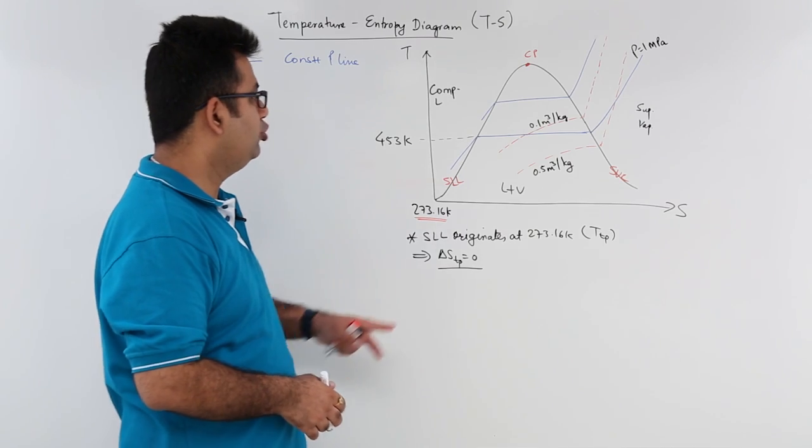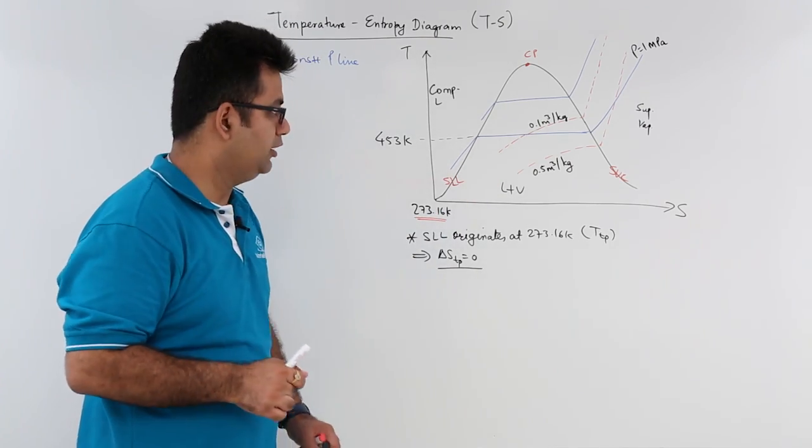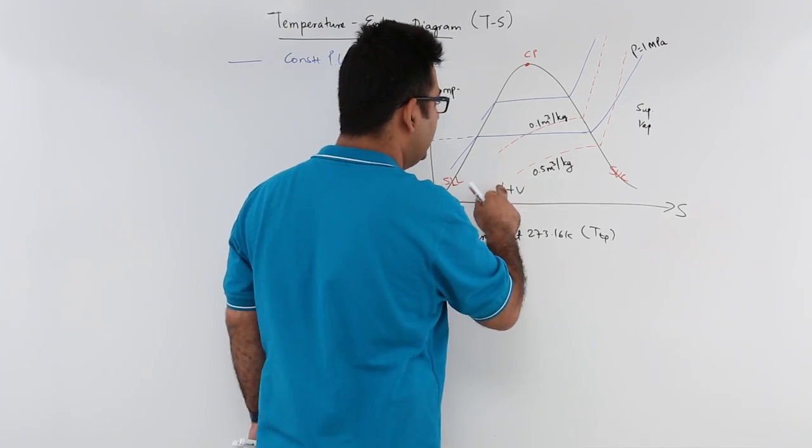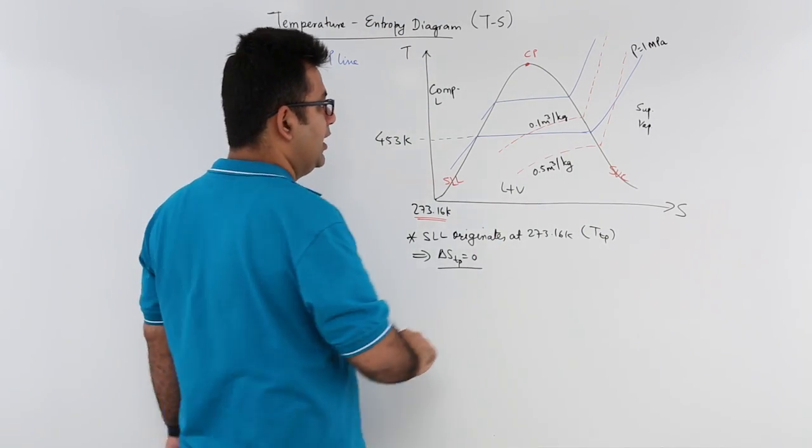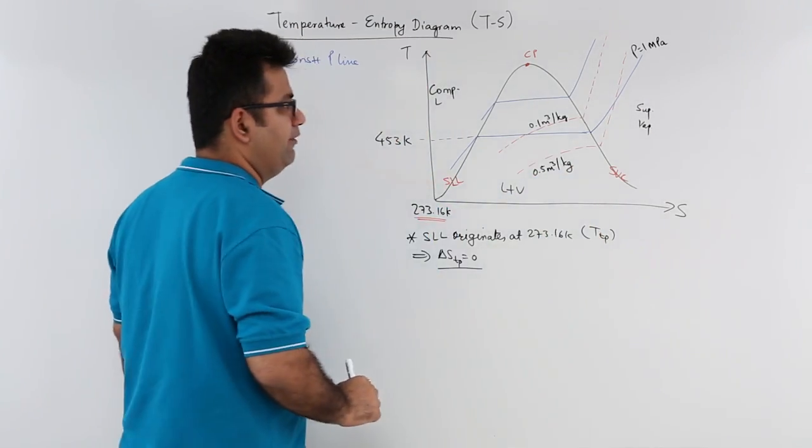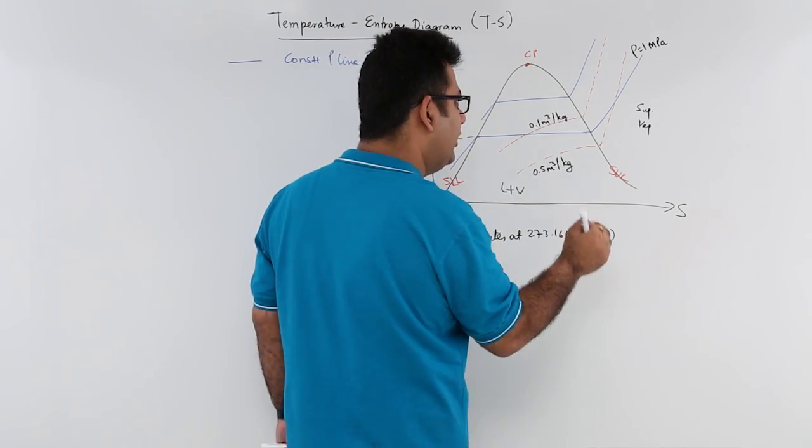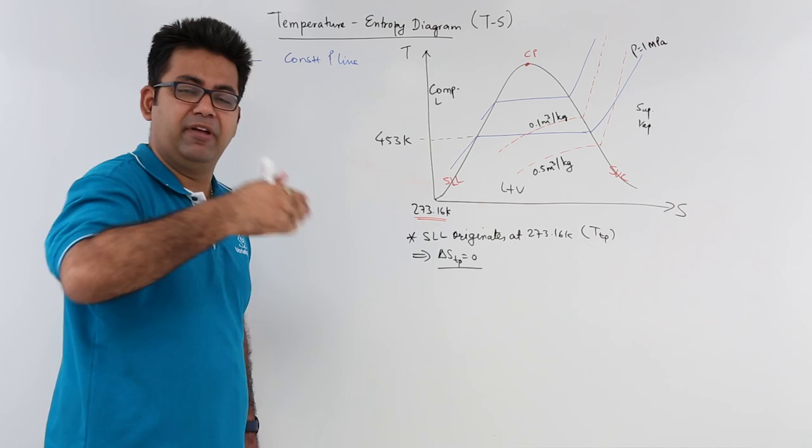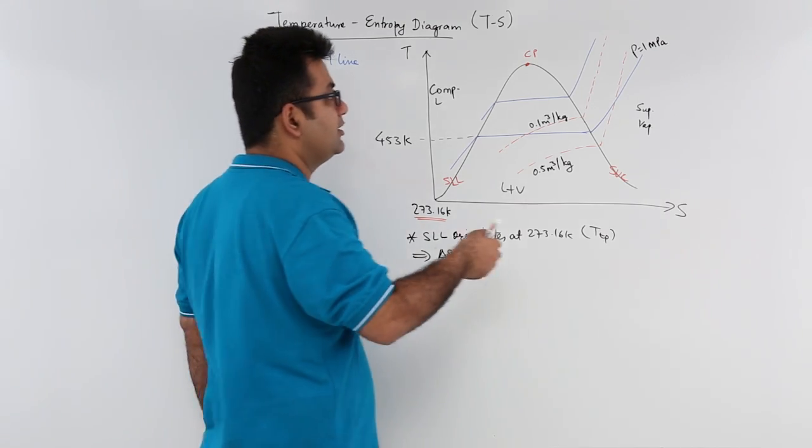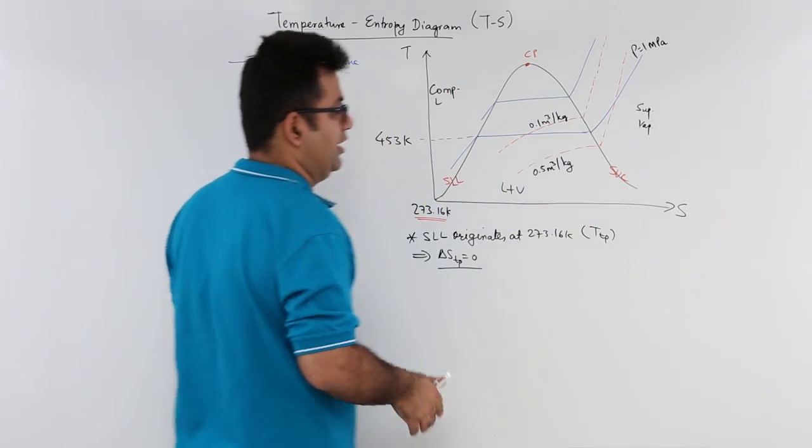Now you have two more lines in the red colored region. In this red colored region, these are the specific volume lines. Once you get into the superheated vapor range, the slope of the specific volume lines is greater as compared to the slope of the constant pressure lines.